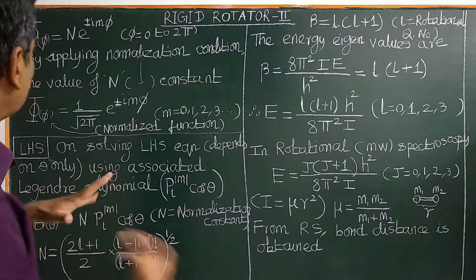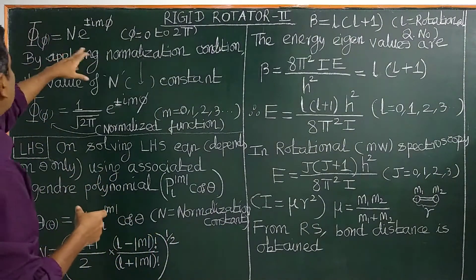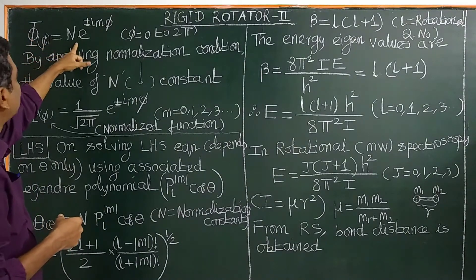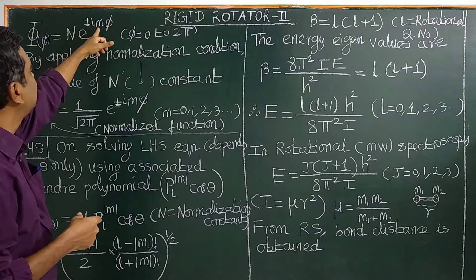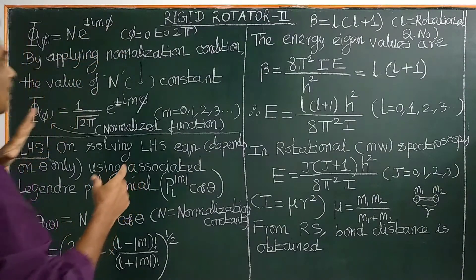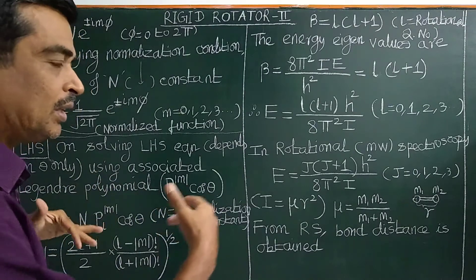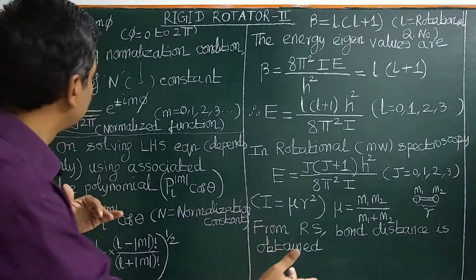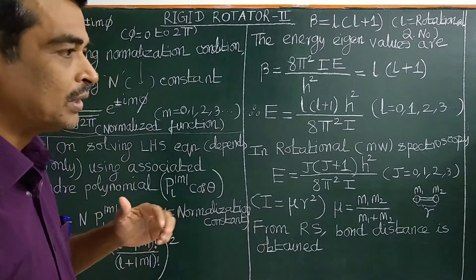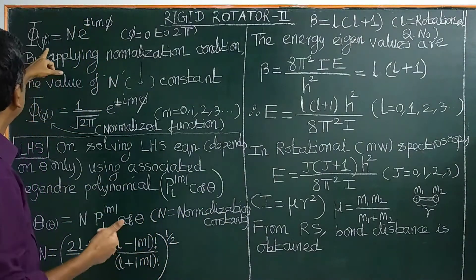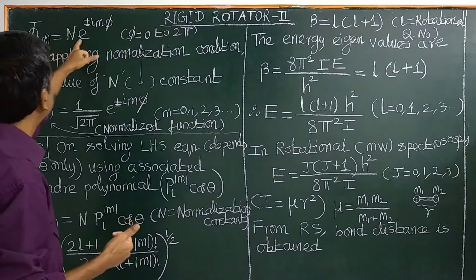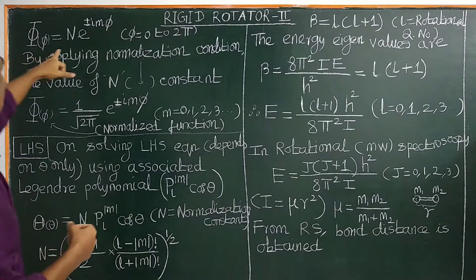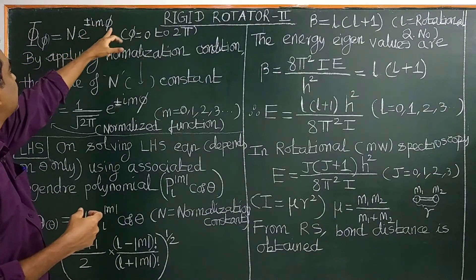In the previous class, we have shown that capital Phi equals N times e to the power plus or minus i·m·φ. On solving the Schrödinger equation, there are two equations — a left-hand side equation and a right-hand side equation. On solving the right-hand side equation, we obtain this wave function: Phi(φ) = N · e^(±imφ).